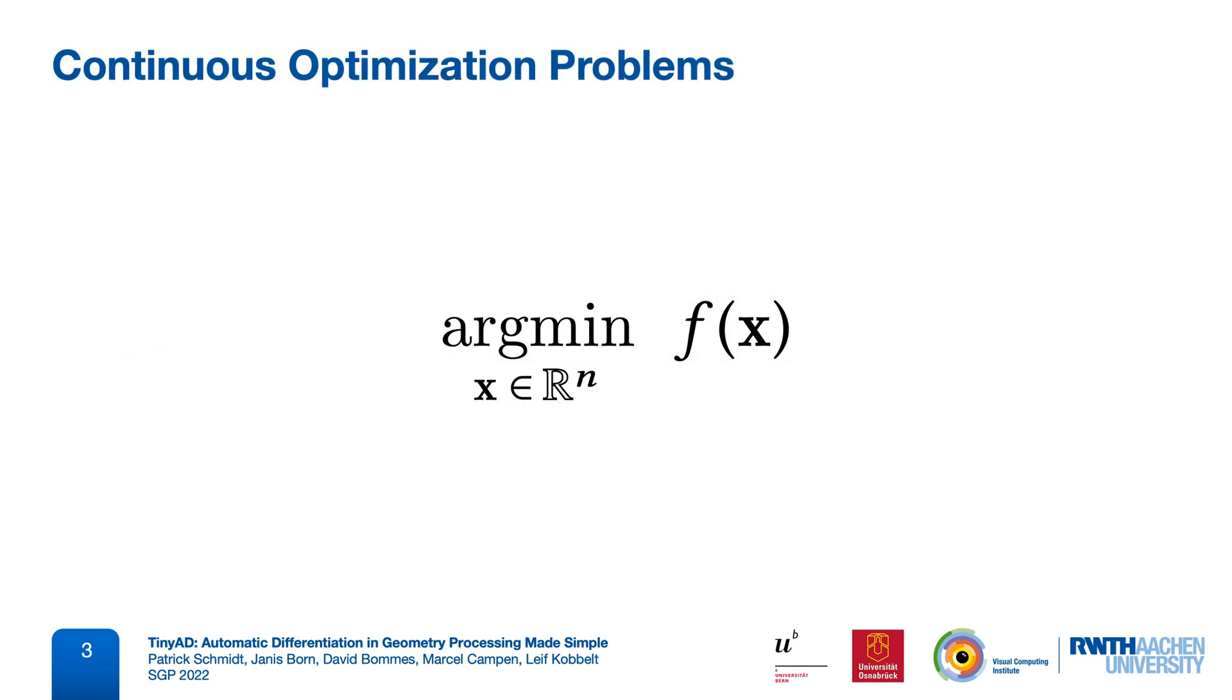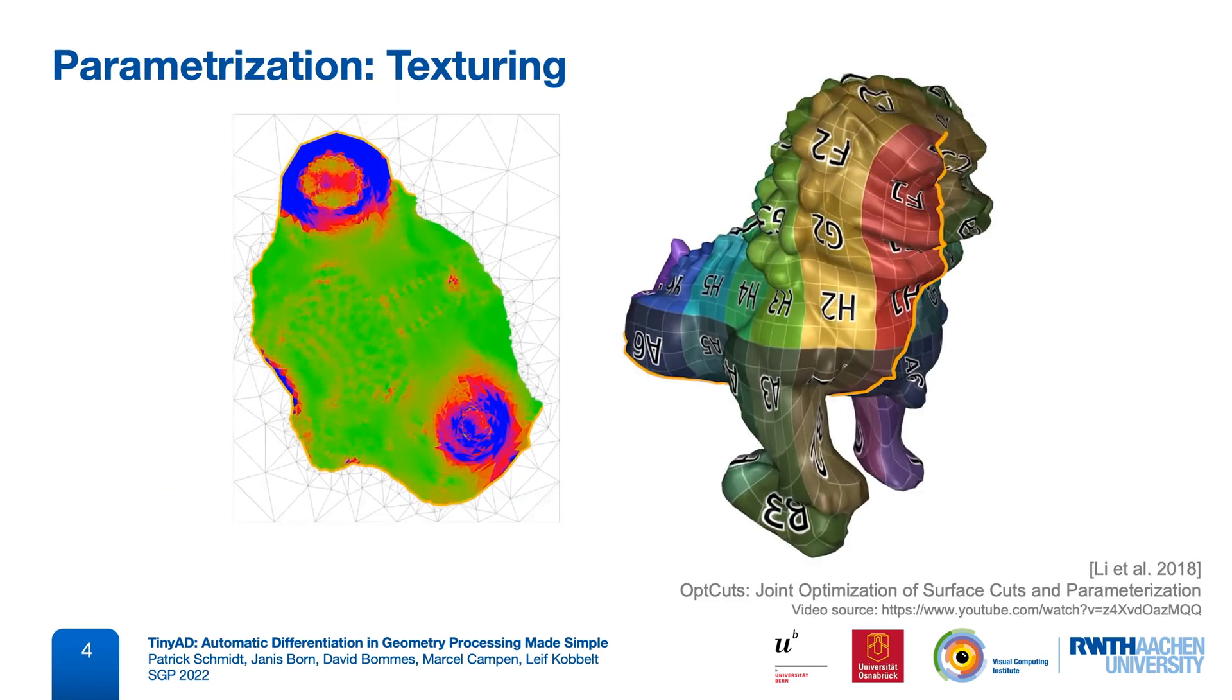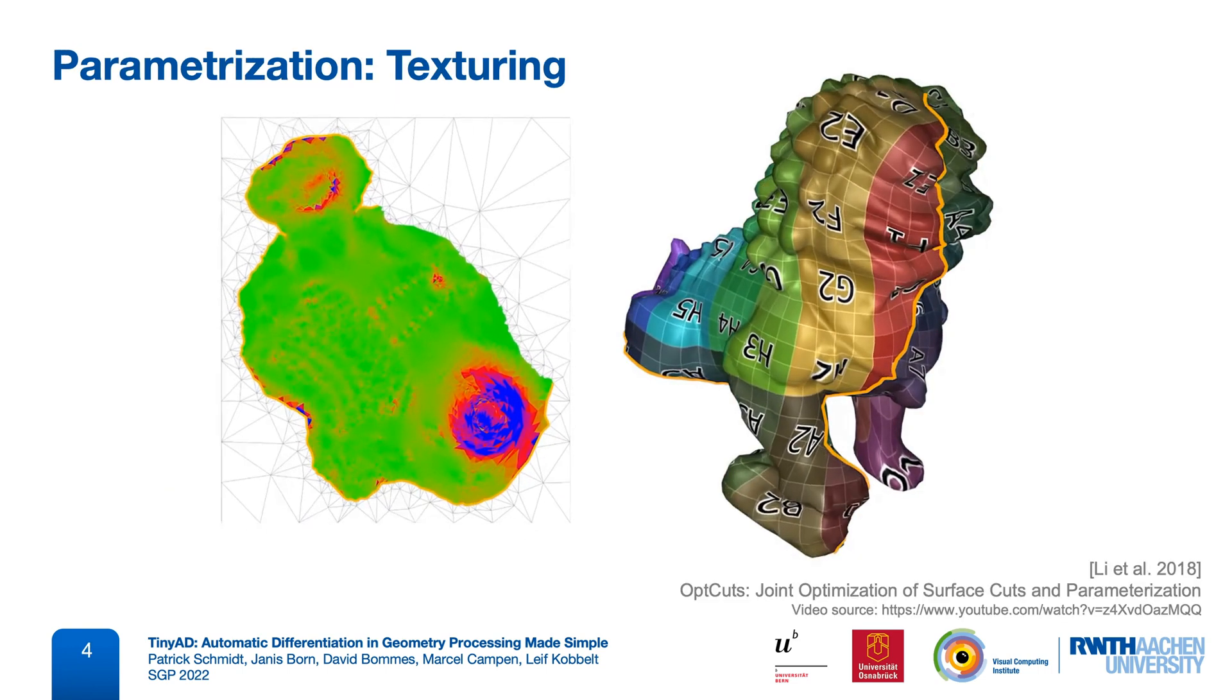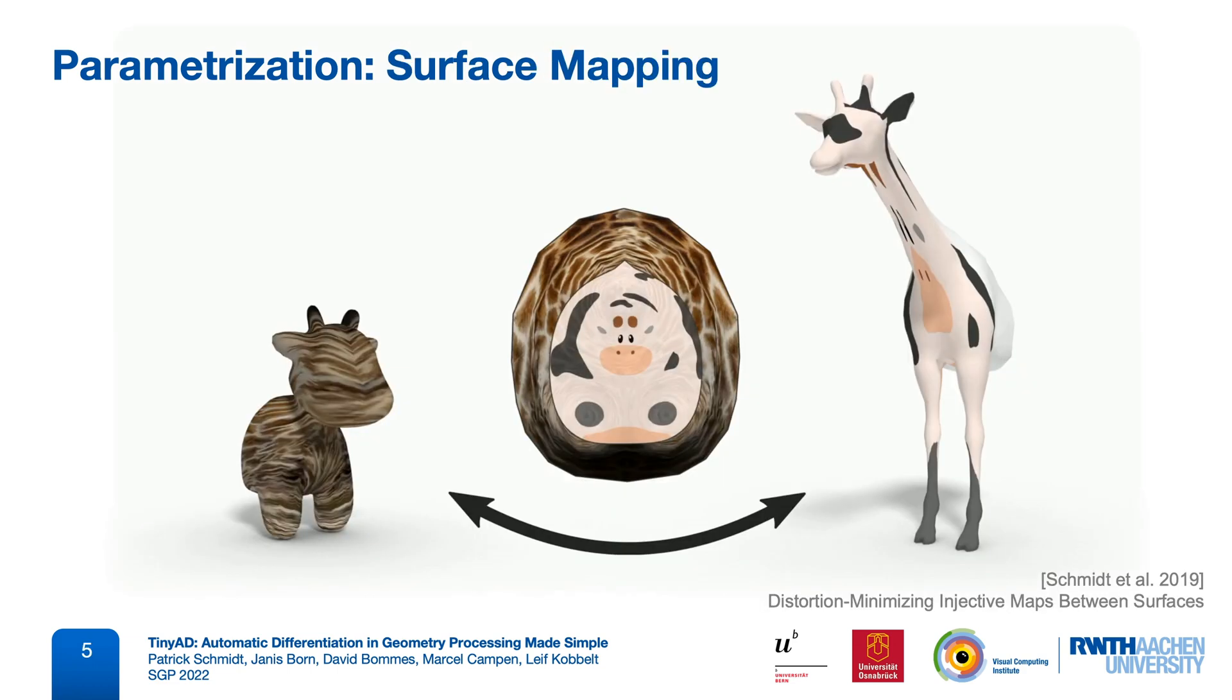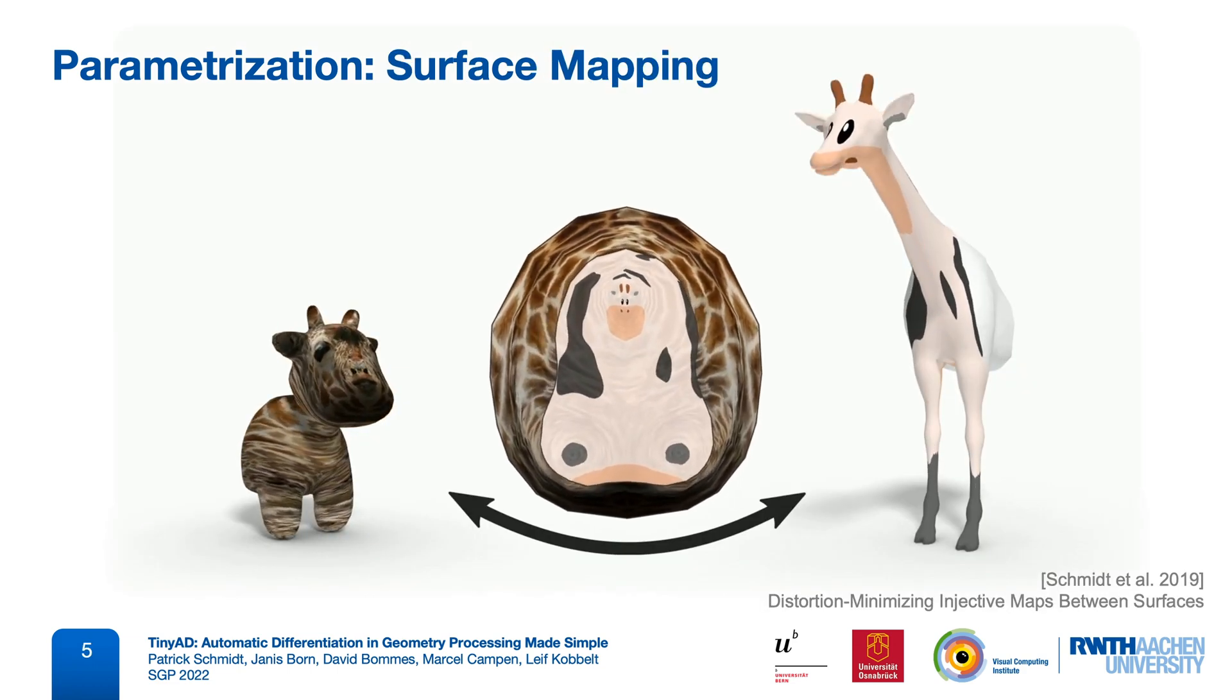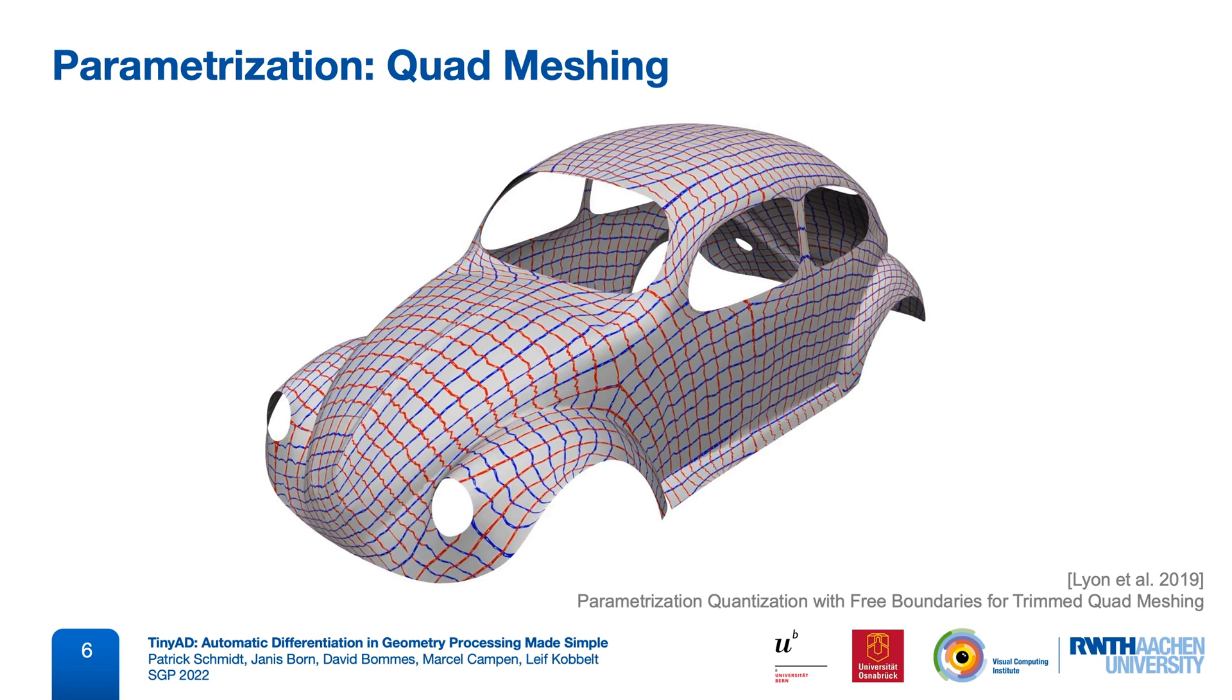There are many different problems in geometry processing that involve some form of nonlinear optimization, where we define an objective function that we want to minimize with respect to a vector of continuous variables. For example, in parameterization, the variables are vertex positions in the plane, and the objective function could measure texture distortion, or measure distortion between different surfaces, or measure element quality for quad remeshing.